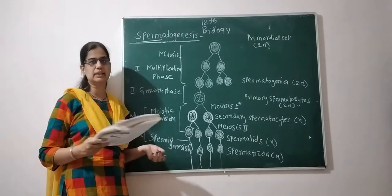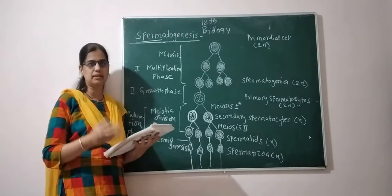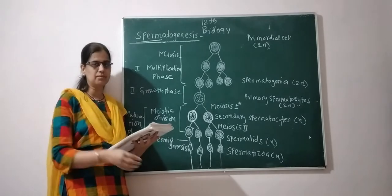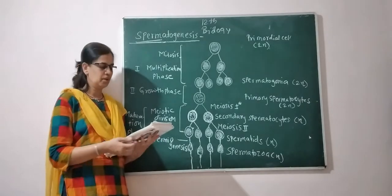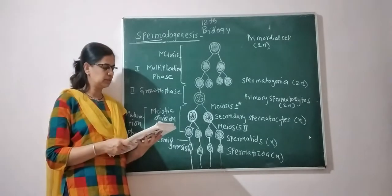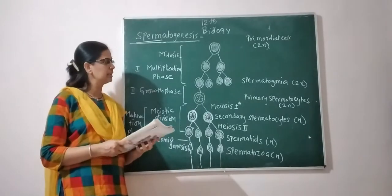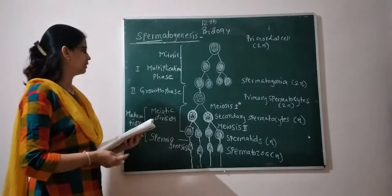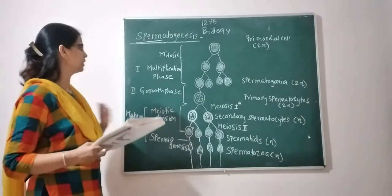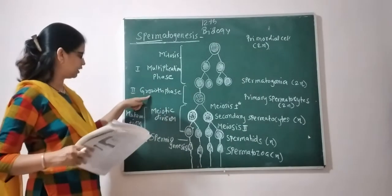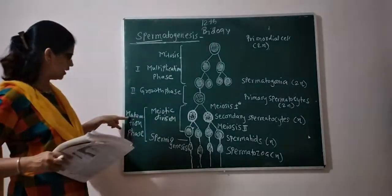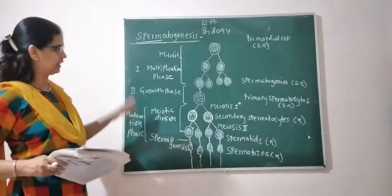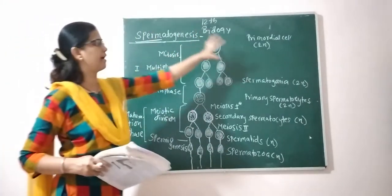The process of spermatogenesis mainly involves three phases: the multiplication phase, the growth phase, and the maturation phase.